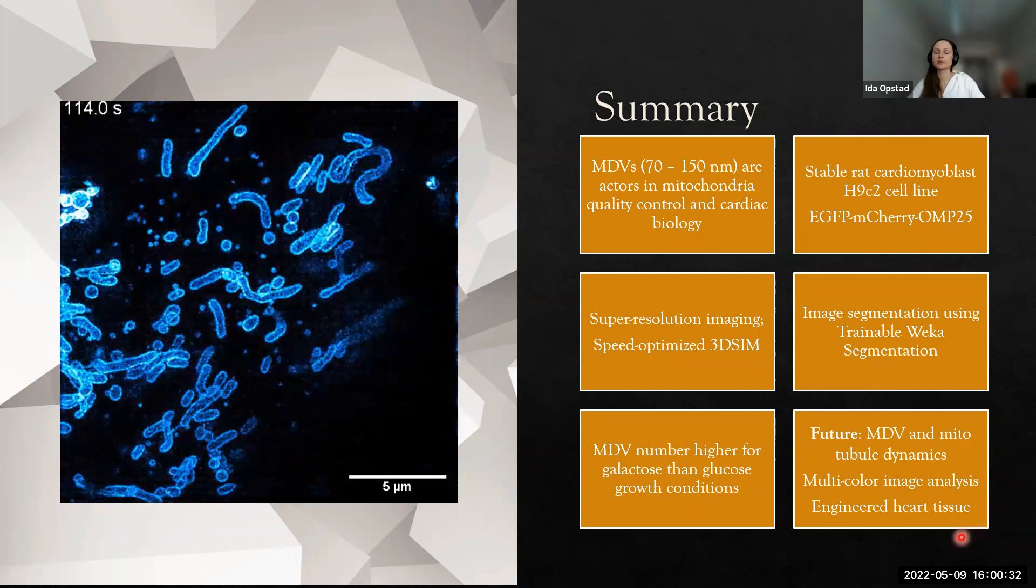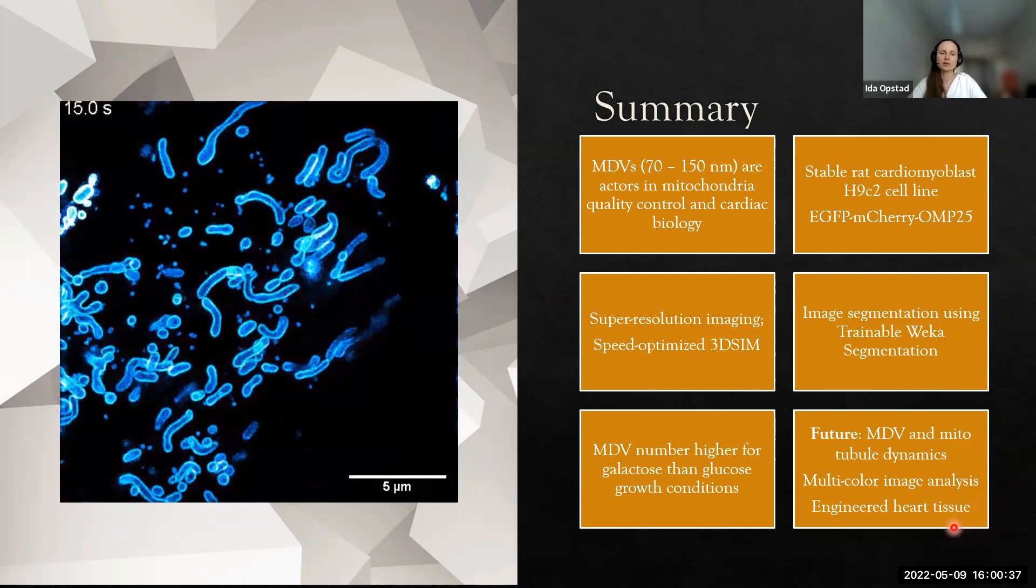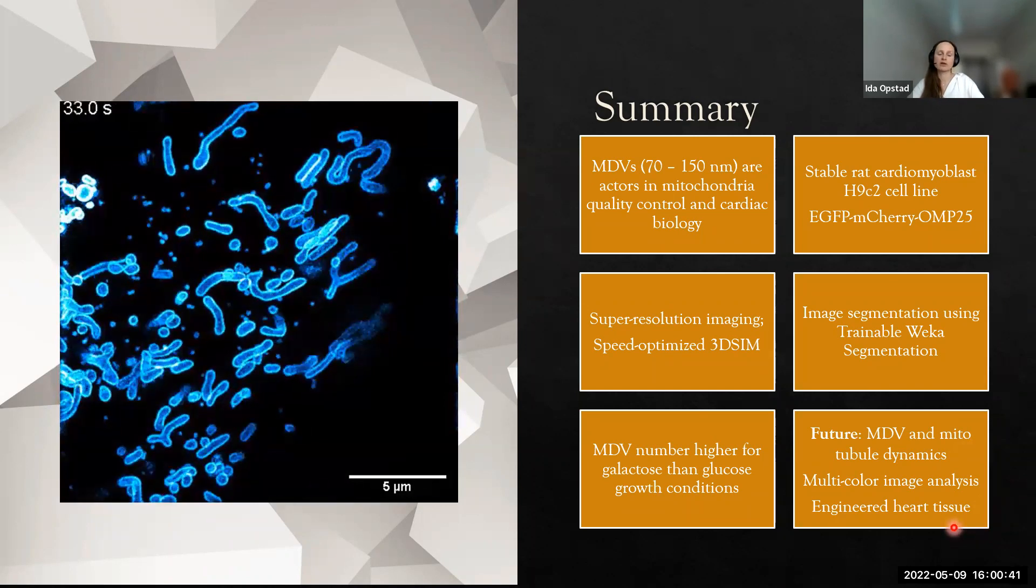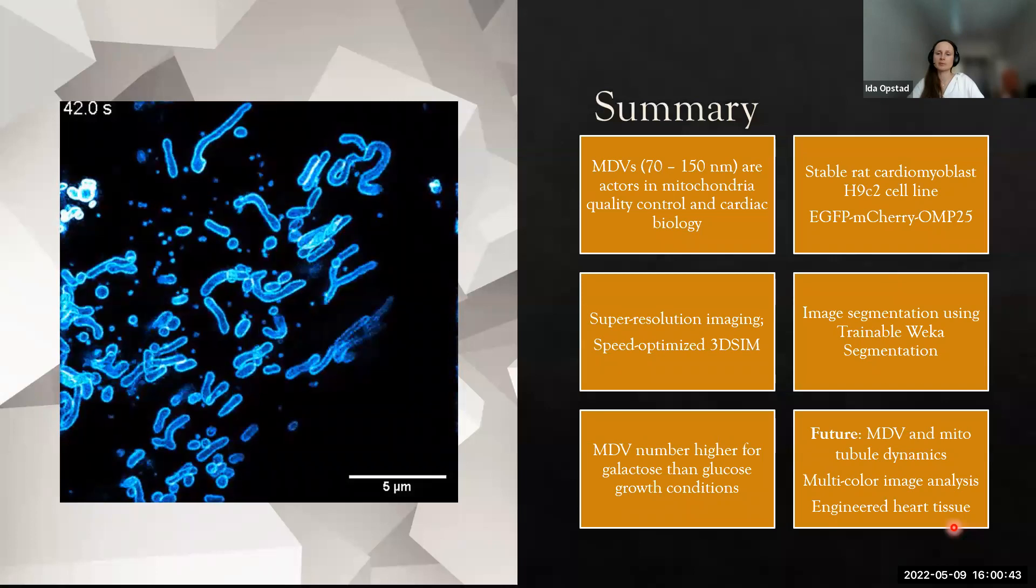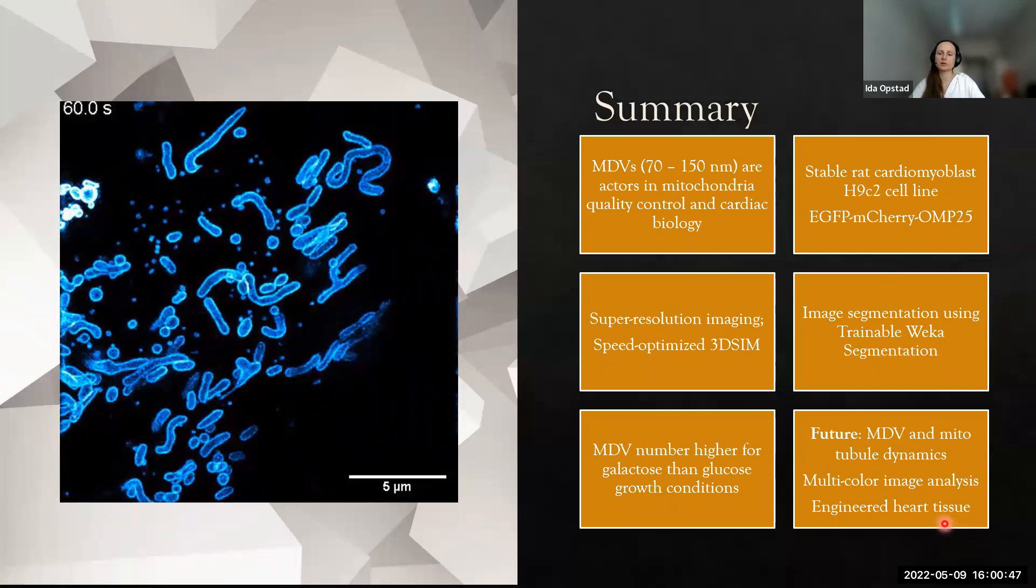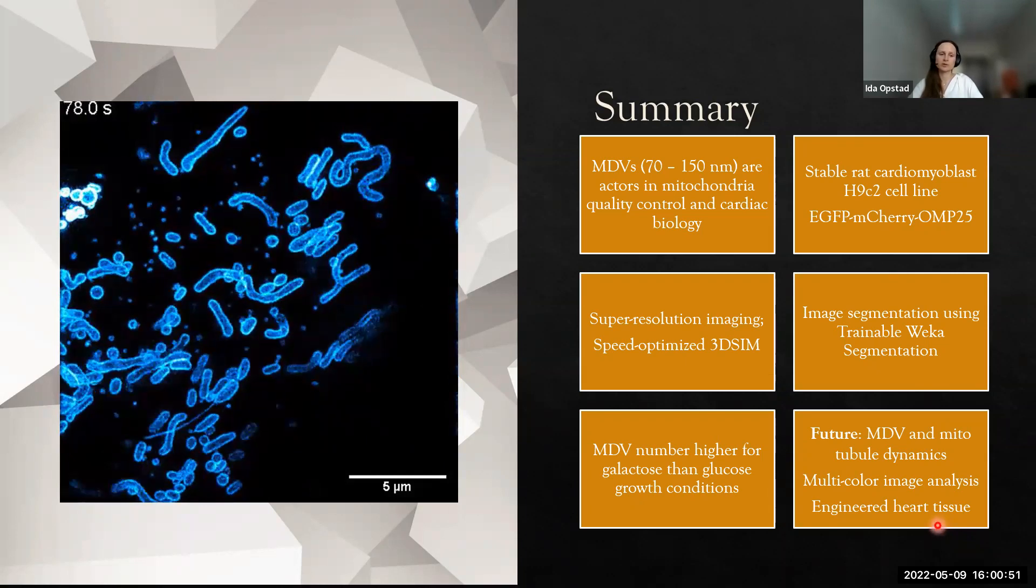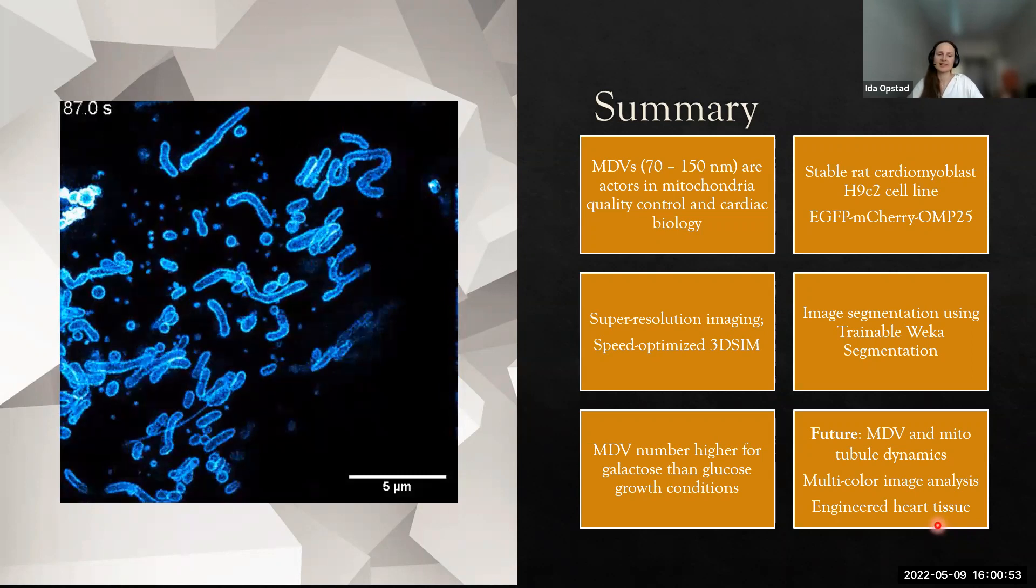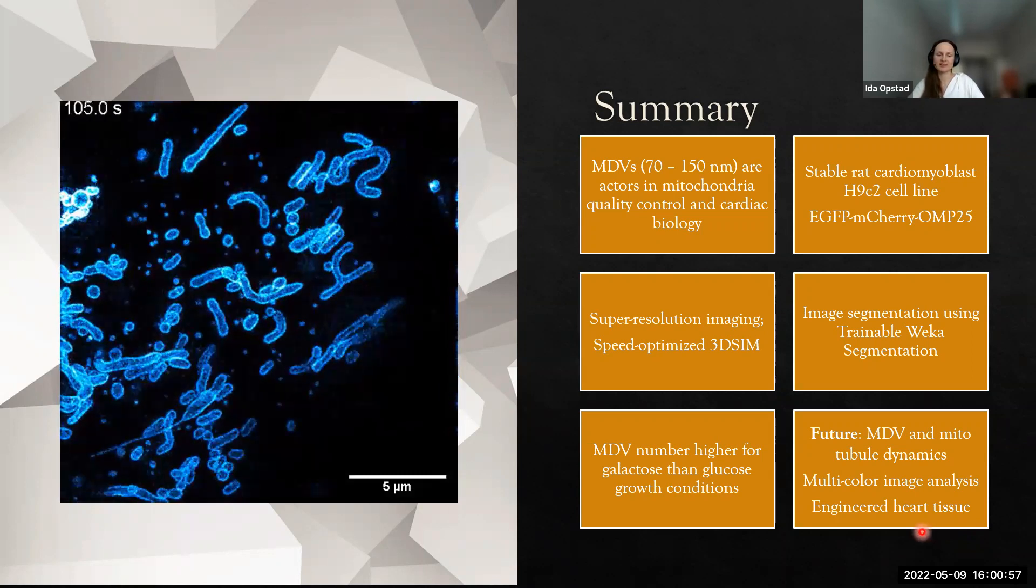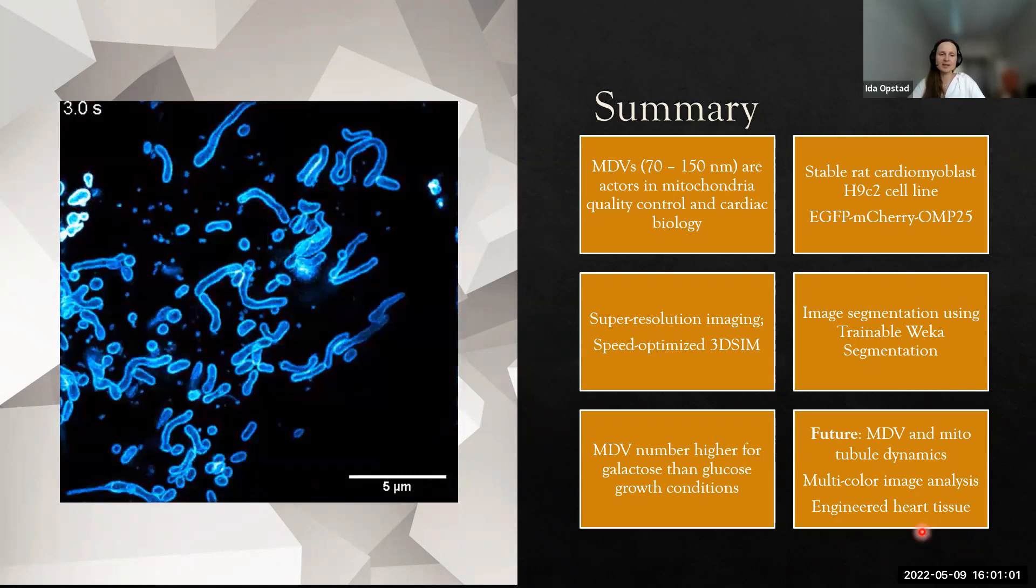We also really want to visualize this in engineered heart tissue because our collaborators are actually growing their own heart tissue in the lab from cell culture and making them beat. They also transfect the cells such that they have fluorescent mitochondria. They have beating fluorescent mitochondria now and we're very excited to see what we can see there.